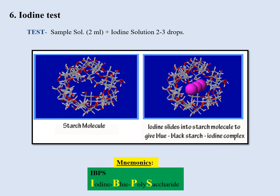Then comes the iodine test, which you are quite aware of — it is a very simple test. The mnemonic is 'IBPF' — 'I' stands for iodine, 'B' for blue, and 'PS' for polysaccharide. So while performing the iodine test, the color you get is blue and the substance identified is polysaccharide.